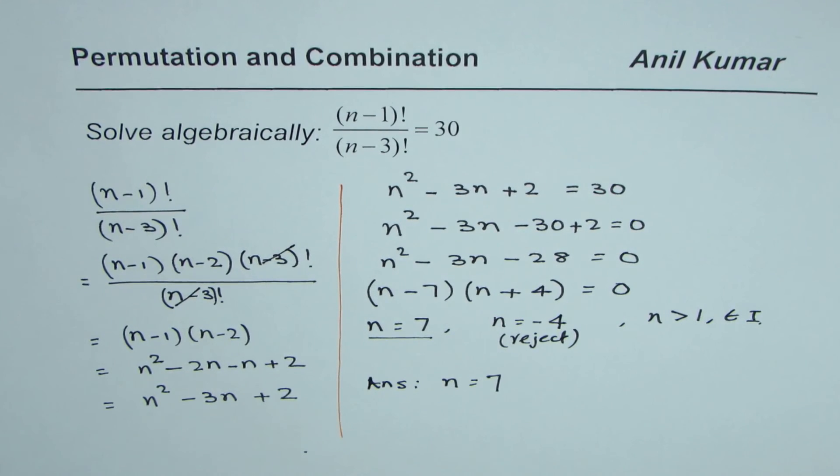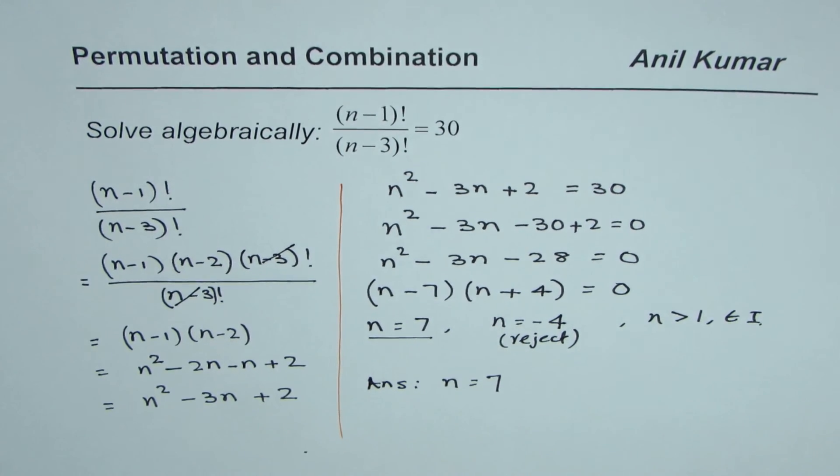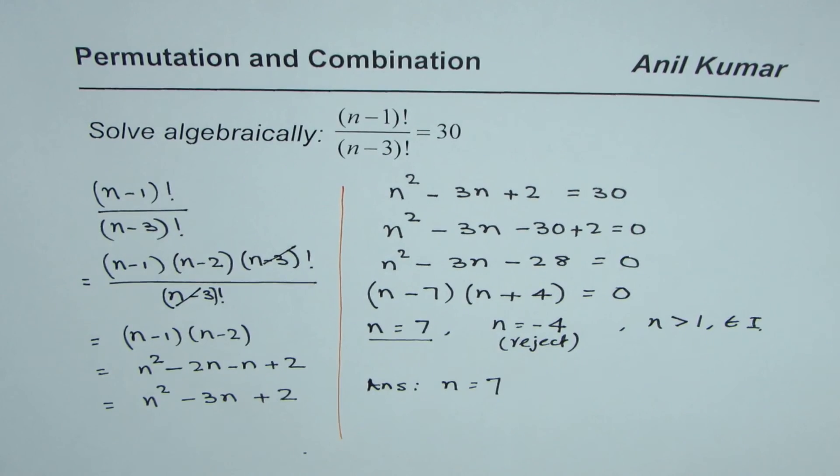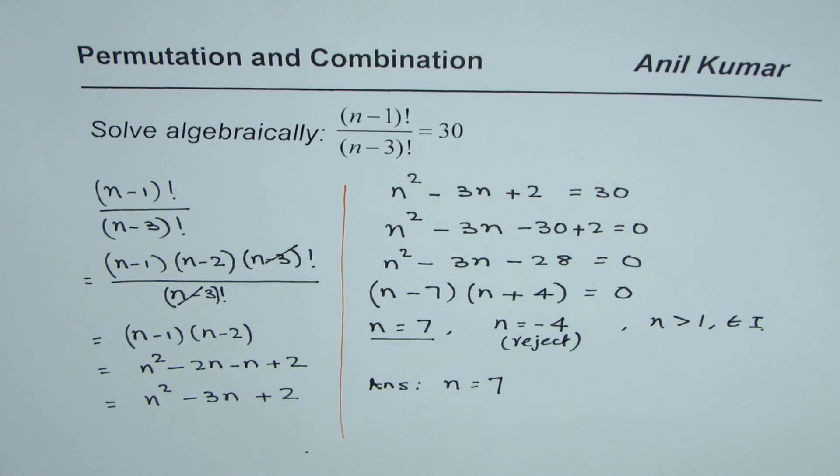So the answer is n equals 7, and that is how you can solve such questions involving factorials. I'm Anil Kumar. You can subscribe and learn a lot from my videos. Thank you and all the best.